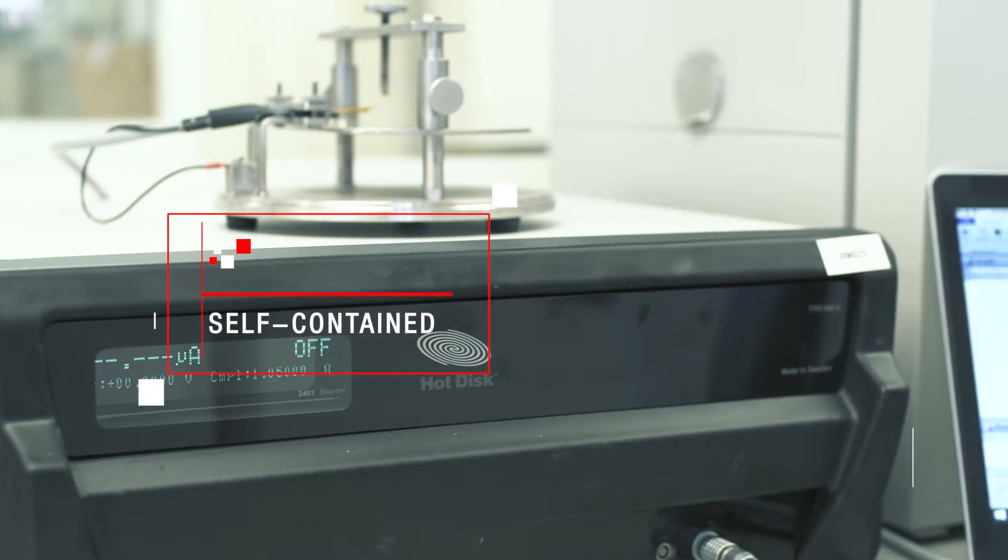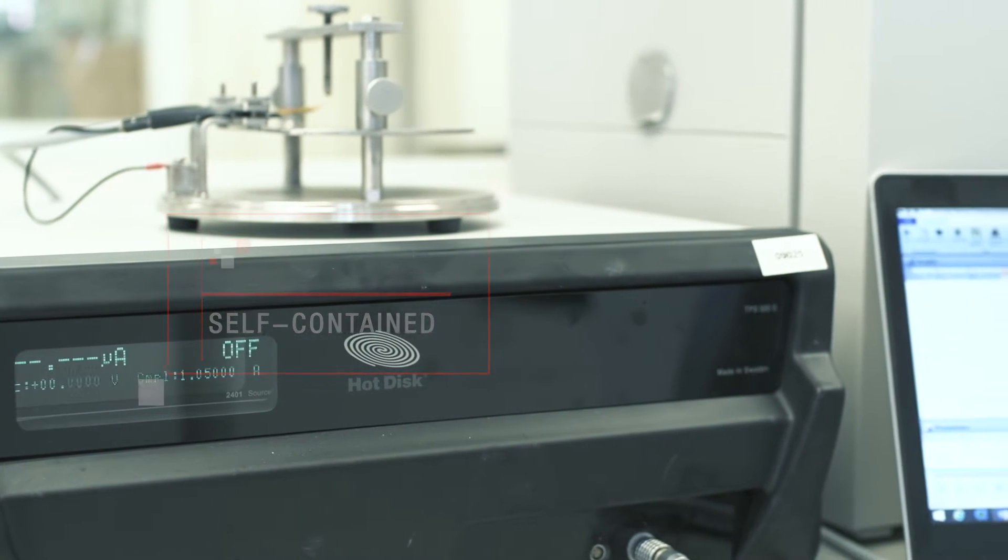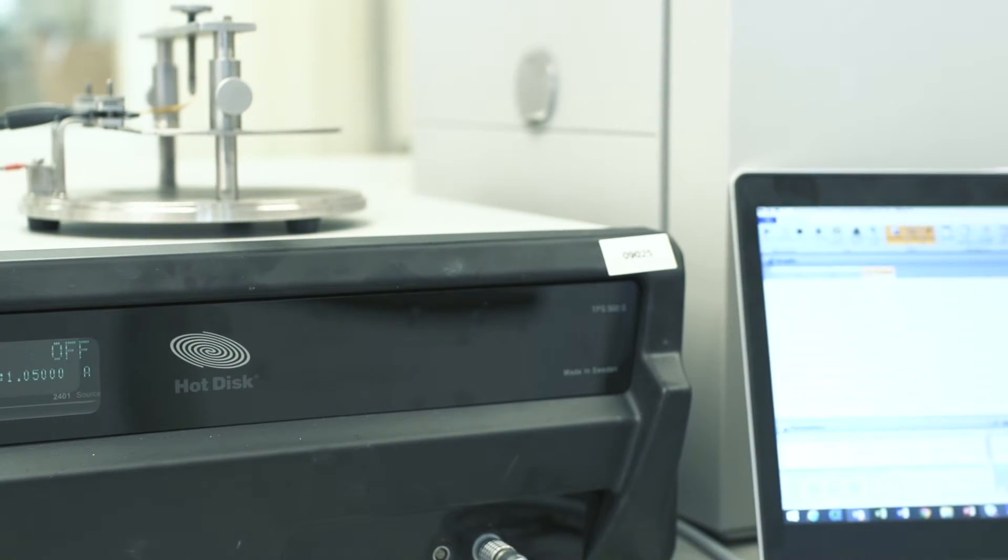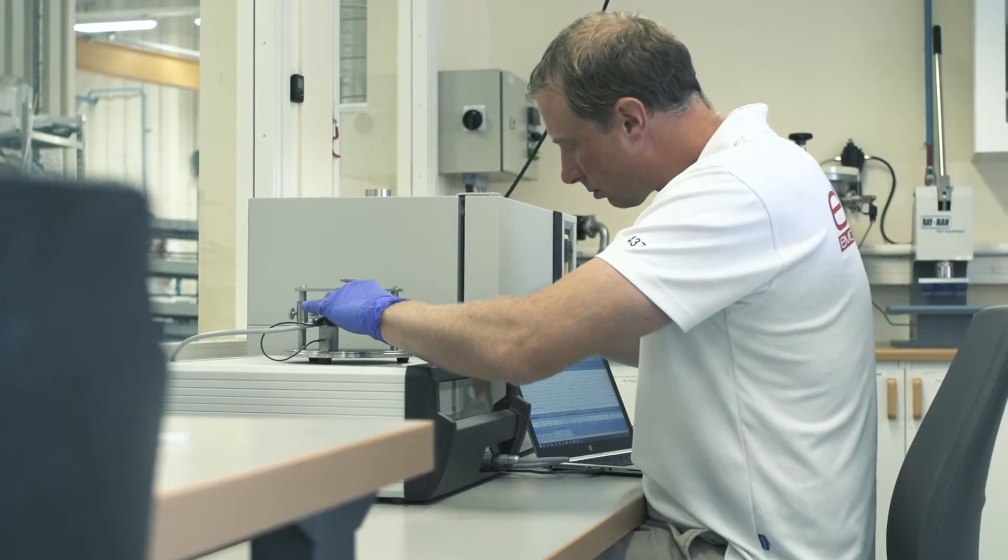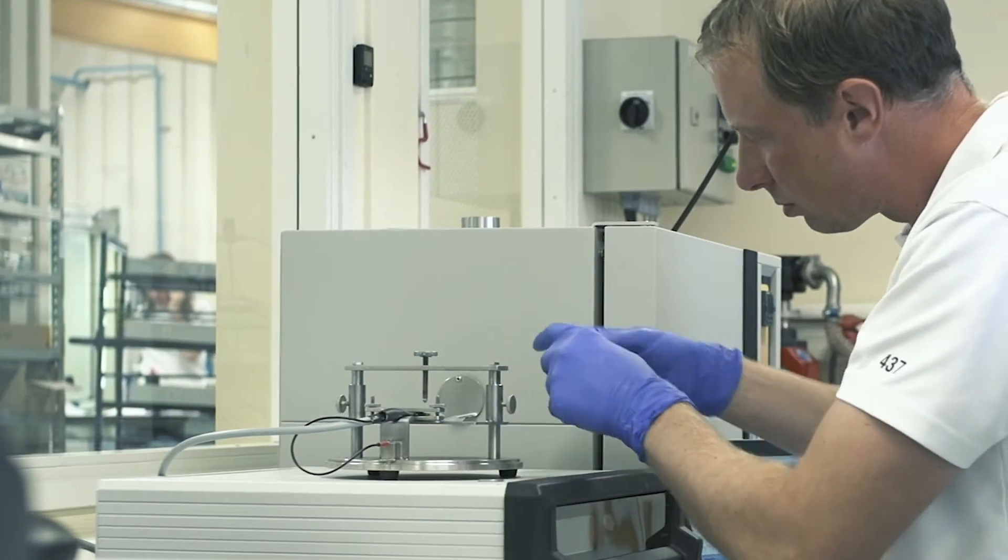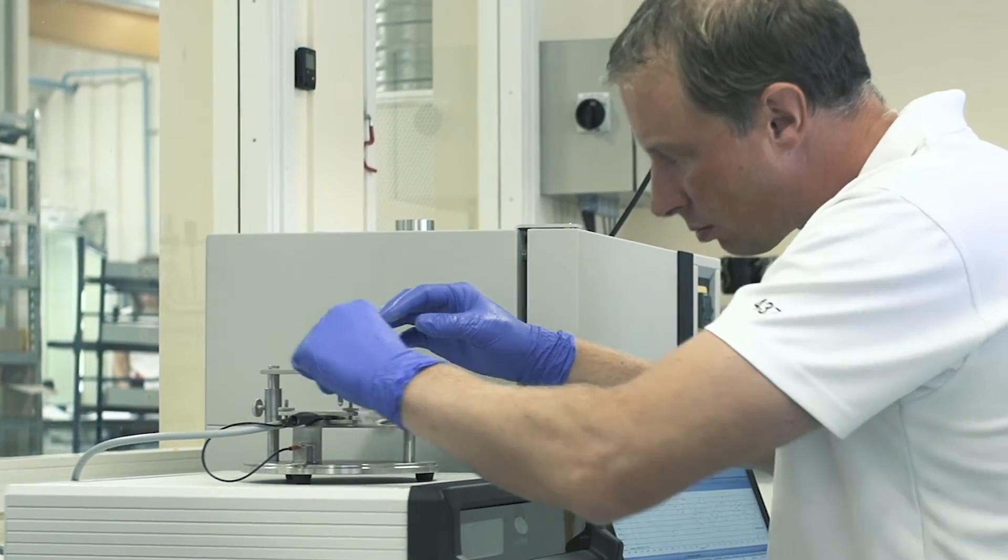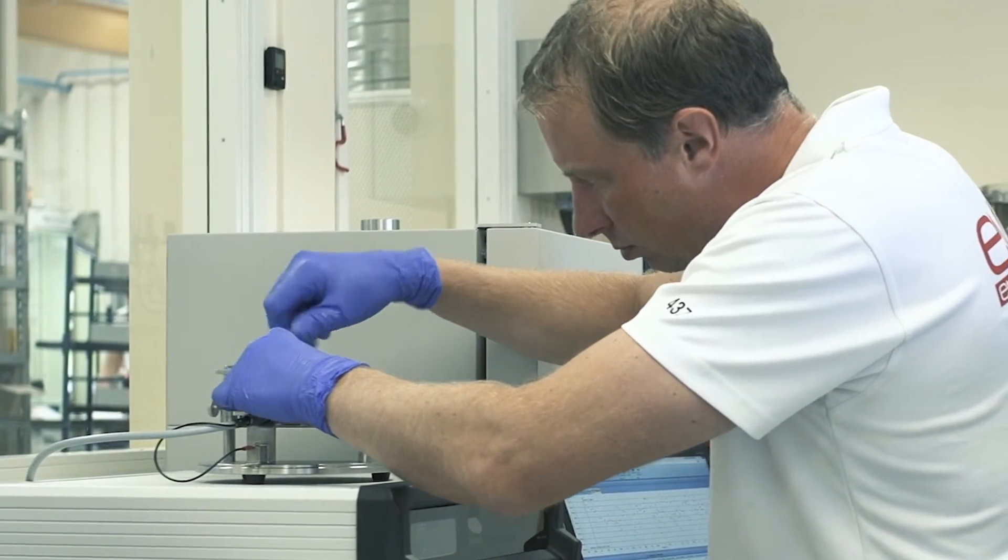Unlike ASTM D5470, the hot disk method is entirely self-contained, in that neither the sample itself nor the test equipment is subject to any other factors, such as surface or positioning tolerances, radiative or conductive heat losses, that may have a significant impact on the test result.